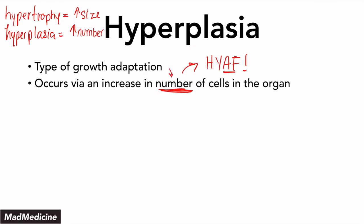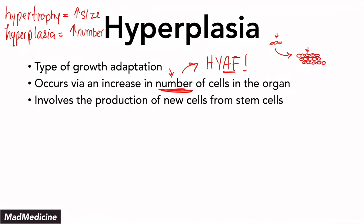When it comes to hyperplasia, because you're increasing the number of cells, if you have three cells in a location, they might become 10, 20, or 30 cells. But the size is not changing — only the number is increasing. The size of the cells in the original set of three and in the expanded set is exactly the same; the number of cells has grown. This all occurs because you have stem cells producing new cells. Hyperplasia involves the production of new cells from stem cells, whereas hypertrophy involves no new production — just the current cells expanding in size. That is a huge distinguishing factor.